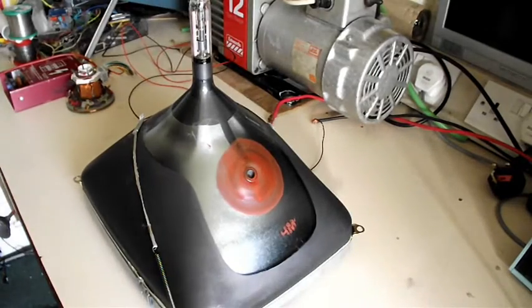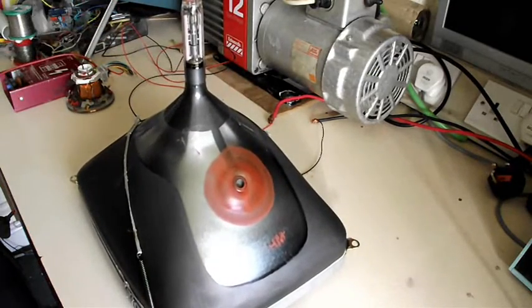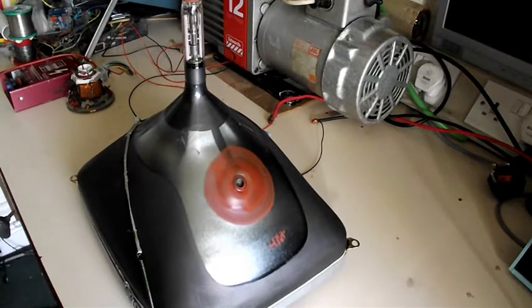When CRTs get old, not only do they sometimes get screen burn, the cathode becomes less emissive, which means there's less electrons from the surface of the cathode.